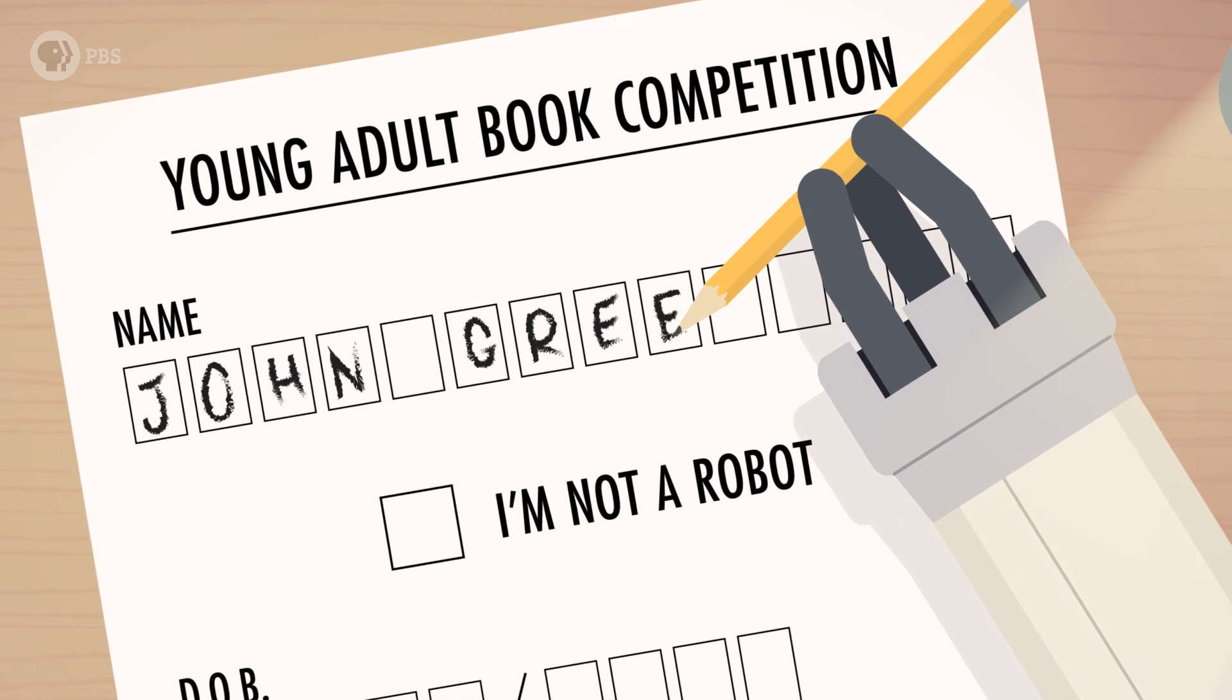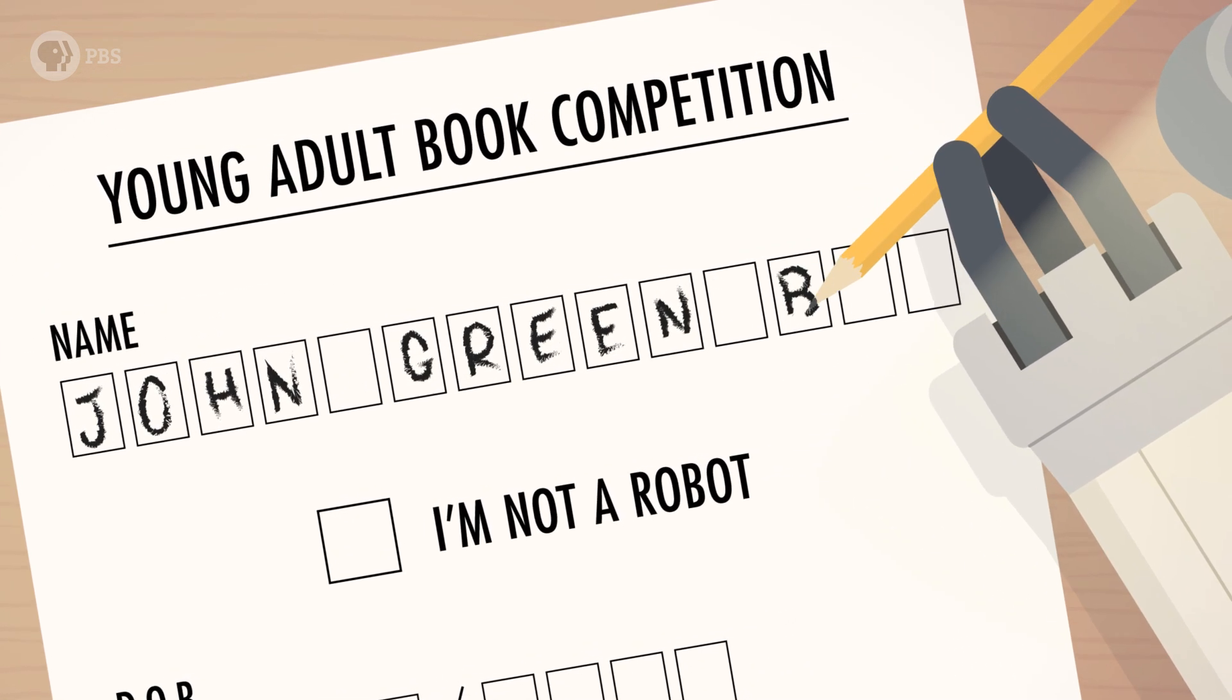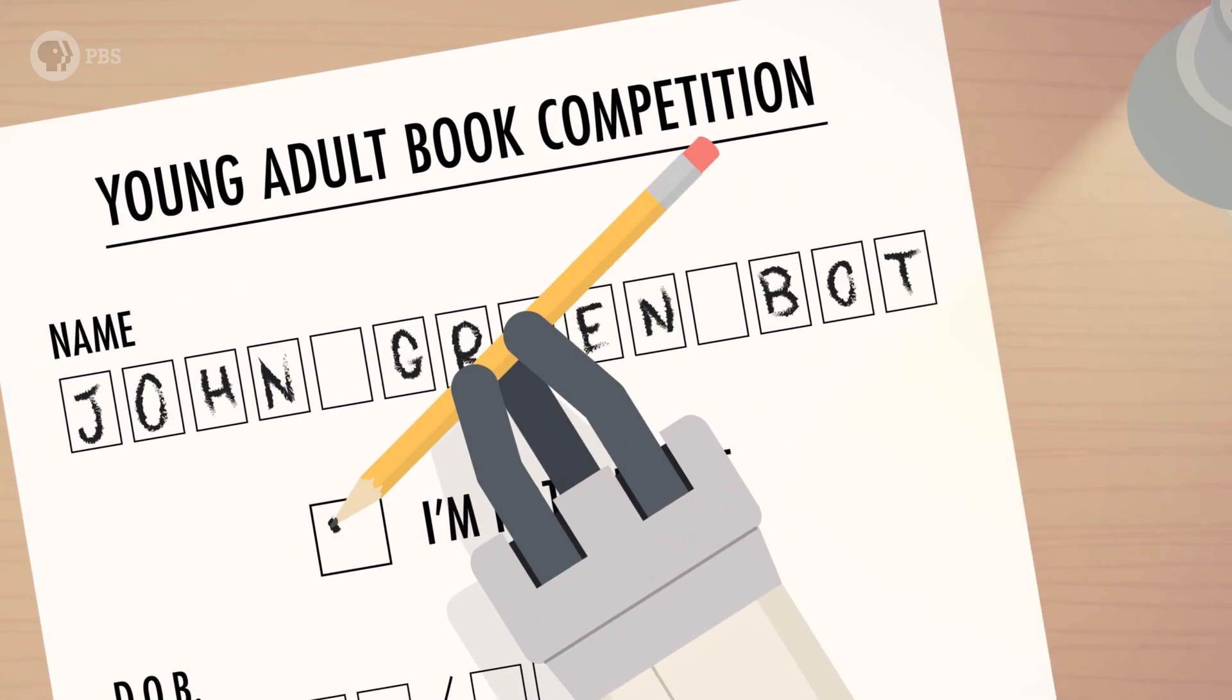By the way, avoiding the segmentation problem is also why official forms sometimes have little boxes for each letter, instead of just a line for writing your name. Even though we don't have to worry about segmentation, recognizing handwritten letters and converting them to typed text is still tricky. Every handwritten J looks a little different, so we need to program our neural network to recognize a pattern instead of memorizing a specific shape.